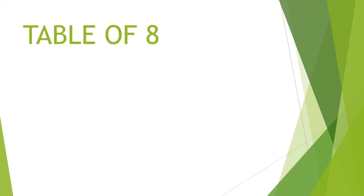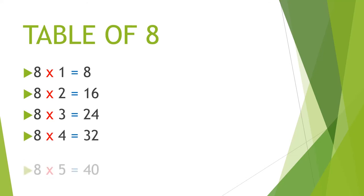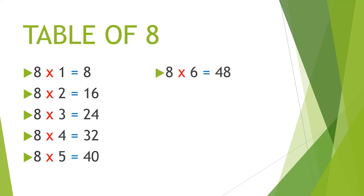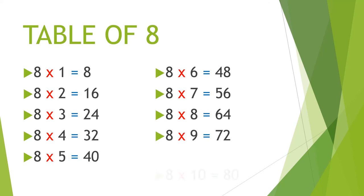Multiplication table of 8. 8 1's are 8, 8 2's are 16, 8 3's are 24, 8 4's are 32, 8 5's are 40, 8 6's are 48, 8 7's are 56, 8 8's are 64, 8 9's are 72, 8 10's are 80.